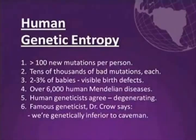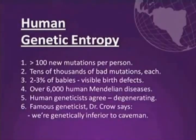The human genetic degeneration problem is enormous. If you go to a human geneticist today and ask them whether the human population is genetically degenerating, they will basically universally say yes. They might imagine that increasing natural selection could stop that. But what we are learning today is that is not true — we can rigorously show that natural selection cannot stop the mutation problem. A very famous geneticist, Dr. Crow, recently said: we are genetically inferior to caveman. He's a hardcore evolutionist.